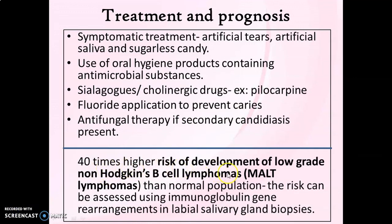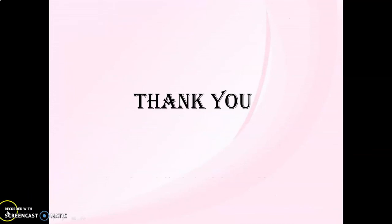An interesting fact about Sjögren's syndrome is its risk of development of lymphoma. Patients with Sjögren's syndrome have a 40 times higher risk of developing lymphoma than the normal population. This lymphoma is usually a low-grade non-Hodgkin B-cell lymphoma or mucosal-associated lymphoid tissue lymphoma. The risk of lymphoma development can be assessed using immunoglobulin gene rearrangements in labial minor salivary gland biopsy, serving as an important marker. That's all about Sjögren's syndrome. Thank you for listening.